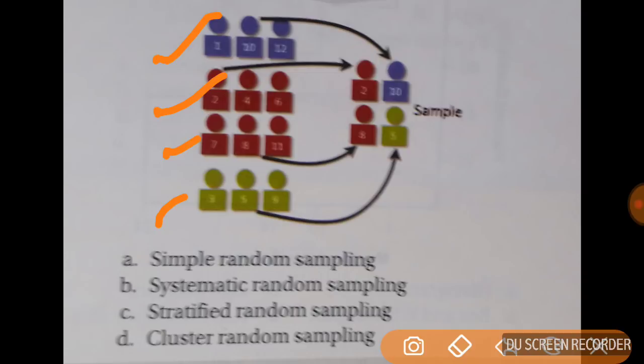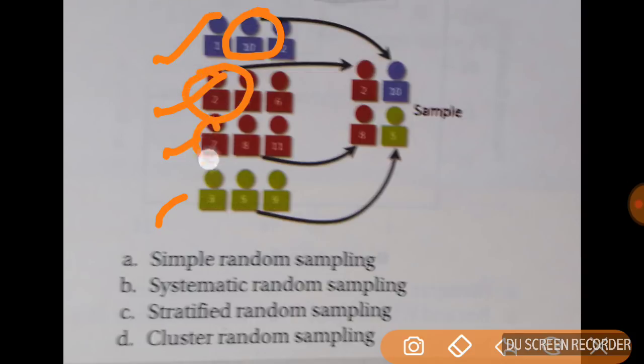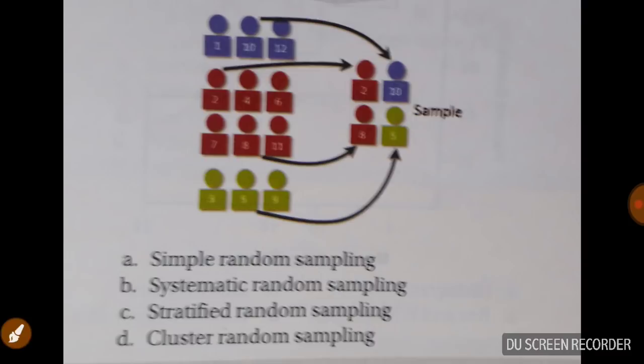But whatever sample we are taking it is just random. Like here in first strata we are taking second one, in the second we are taking first one, then first one, then second one, and then second one. There is no systematic sampling, but it is stratified. So it is stratified random sampling. It is applicable for large non-homogeneous population. If you see why we are saying it non-homogeneous, you see here 1, then 10, then 12, then 2, then 4, then 6. It is not like 1, 2, 3, 4, 5, 6.